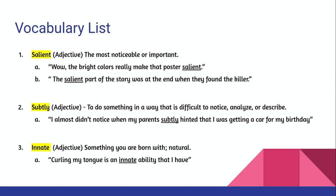To make this lesson go a little bit faster, I'm going to read for you the word, the part of speech, and the definition, but you can pause the video if you need to and read through the examples I have provided. The first word is 'salient,' an adjective meaning the most noticeable or important. Number two is 'subtly,' also an adjective, meaning to do something in a way that is difficult to notice, analyze, or describe. Your third word is 'innate,' also an adjective, which means something that you are born with — something that is natural to you.